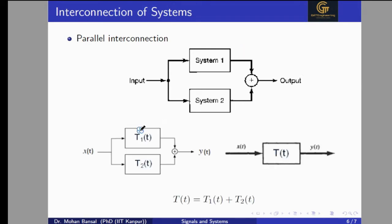If we have system functions T1(T) and T2(T) both in parallel, then the overall system function T(t) will be T1(T) plus T2(T). This is the parallel interconnection.